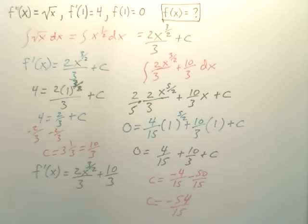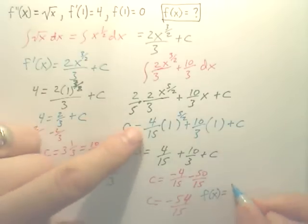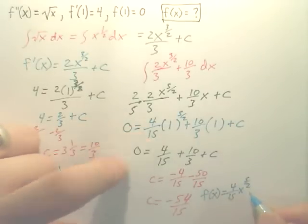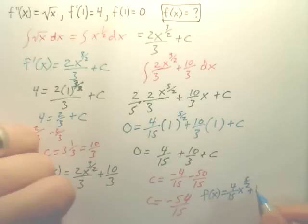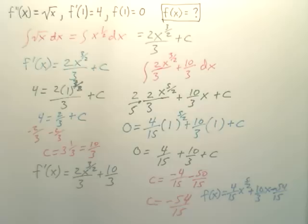So, all of that said, f of x looks like it's going to be this equation, which was four-fifteenths x to the five over two, plus ten over three x, minus fifty-four over fifteen. That is my original function.